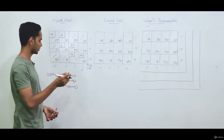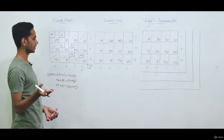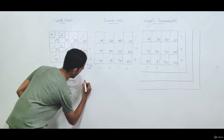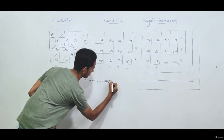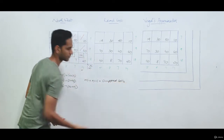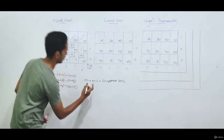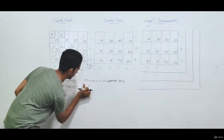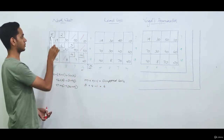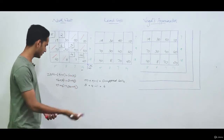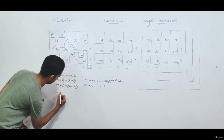One thing I should have mentioned before finding the initial basic feasible solution is checking for degeneracy. The rule is m plus n minus 1 should equal the number of occupied cells, where m is the number of rows and n is the number of columns. Here, 3 rows and 4 columns gives 3 plus 4 minus 1 equals 6. Counting occupied cells: 1, 2, 3, 4, 5, 6 — no degeneracy. The initial basic feasible solution per the Northwest rule comes to 1015 rupees.